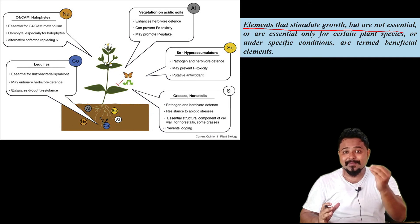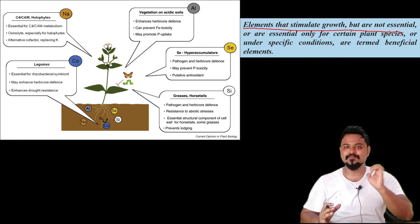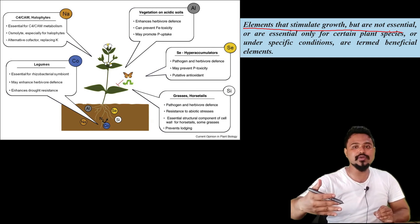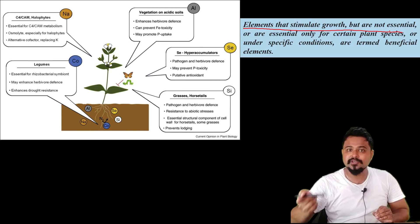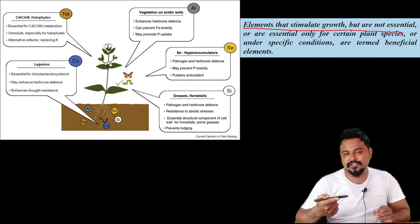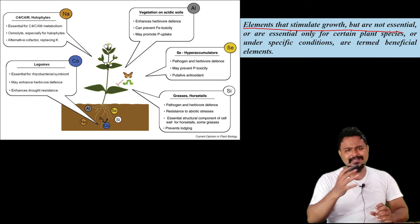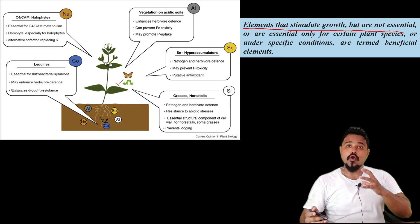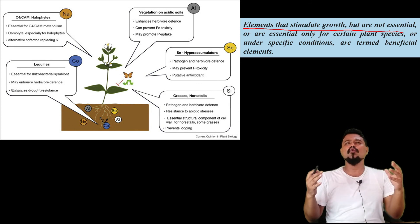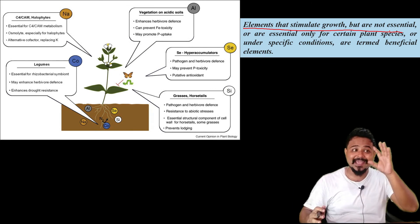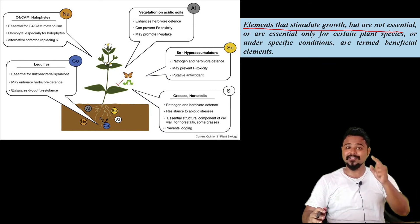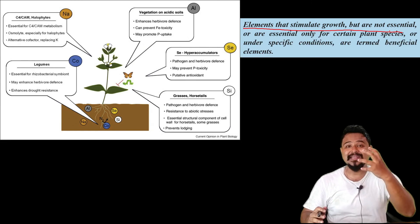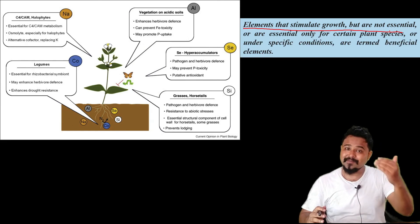These elements are beneficial but not essential. Essential elements are required to complete the life cycle — growth, development, and metabolism. Beneficial elements are not required to complete the life cycle, but if you want to use these elements, they can provide additional benefits. For example, they can aid vegetation on acidic soil.